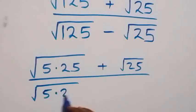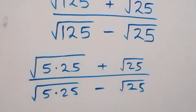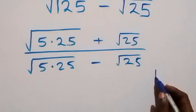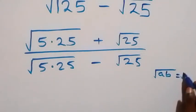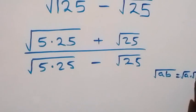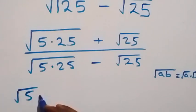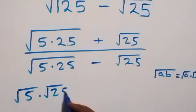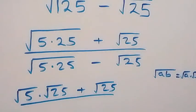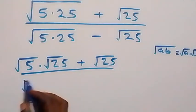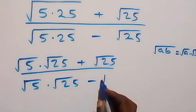...twenty, then minus root 25. From when we have root of a multiplied by b, we can separate this as root a times root b. That is, here we have root 5 times root 25, then plus root 25, divided by — also here we have root 5 times root 25, then minus root 25.